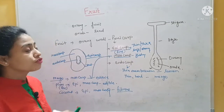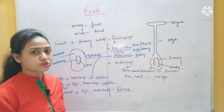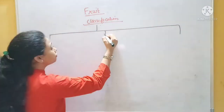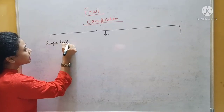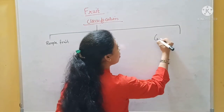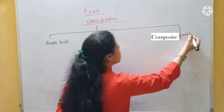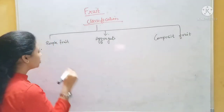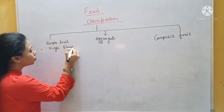Now let's look at the classification of fruit. Fruit is generally divided into three categories. The first is called the simple fruit, the second is called the aggregate fruit, and the third one is called the composite fruit. Let's see them one by one. What is the simple fruit? Simple fruits are those which are developed from a single flower.